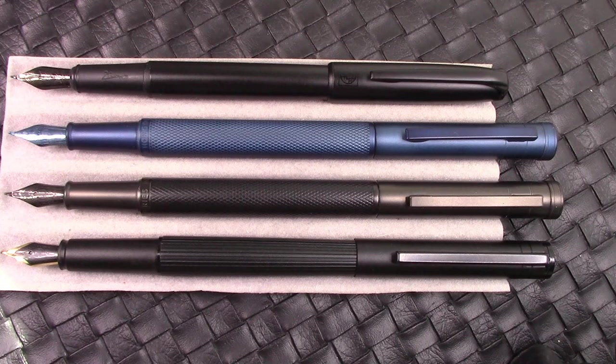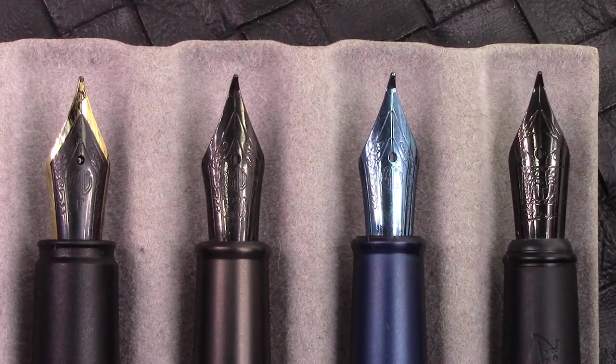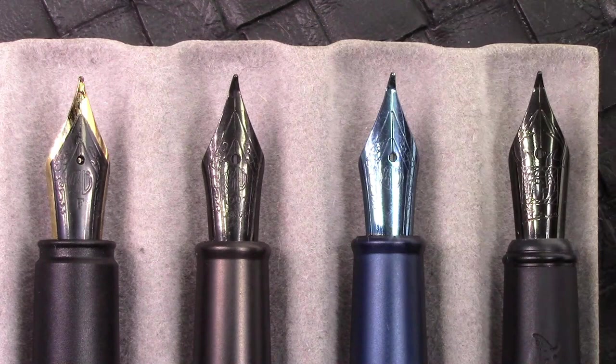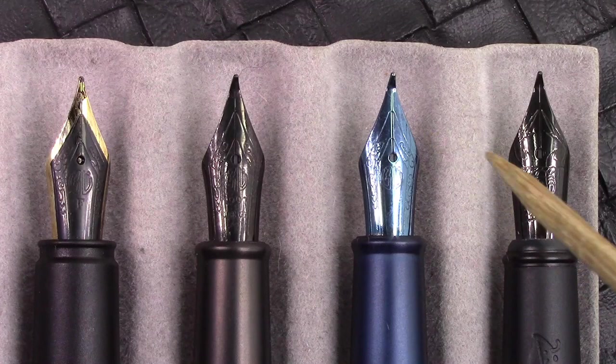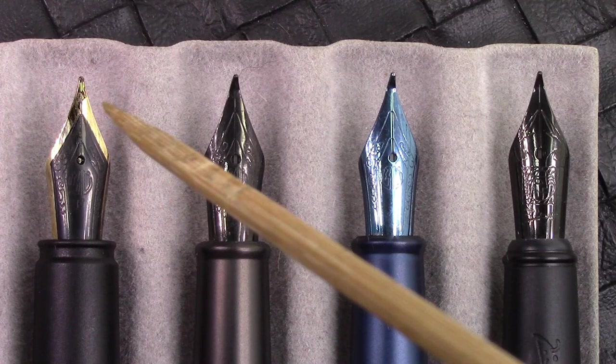I think we need to look closely at the nibs and sections because all these have much differently designed nibs. One of the main differences is these three all have Fude-style nibs. We have two black coated nibs. Looks like they're similar coating. This one is blue, which is great because it matches the pen. Here we have two-tone with black and gold, and this is just a standard fine nib. It also comes in extra fine.